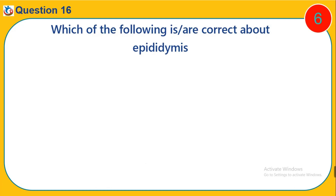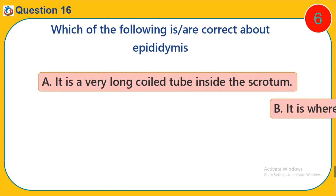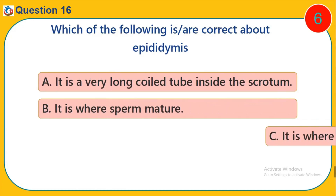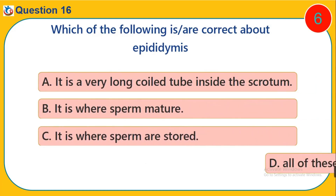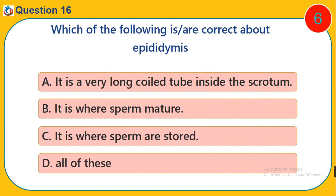Question 16. Which of the following is or are correct about epididymis? A. It is a very long coiled tube inside the scrotum. B. It is where sperm mature. C. It is where sperm are stored. D. All of these.